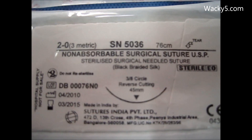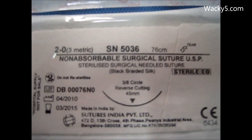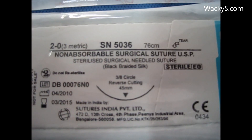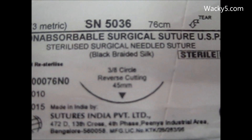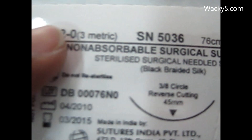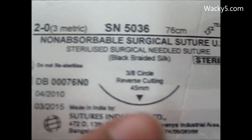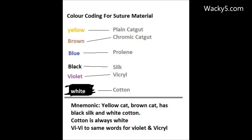Sutures which are very fine are used in ophthalmology surgery. Needles are of two types: having three-eighths of the circle covering, or half of the circle.